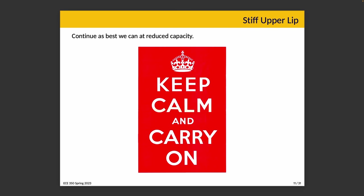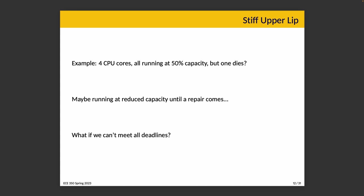Option two: stiff upper lip — or in UK English, keep calm and carry on. If the system cannot be restored to full capacity automatically, the next best thing is if the system can continue as much as it can, most likely at some sort of reduced capacity. Suppose the system has four CPU cores, one of them dies, but the CPU was never used at more than 50% capacity when all cores were healthy. The system is worse off certainly, and its maximum capacity has been reduced, but in practice the system is able to run at its original capacity. That's one reason for redundancy in the system — the ideal case is that we have plenty of extra capacity such that if one CPU dies, everything works out okay.